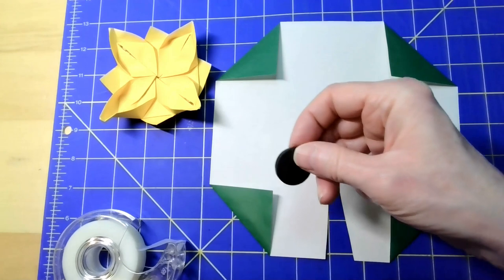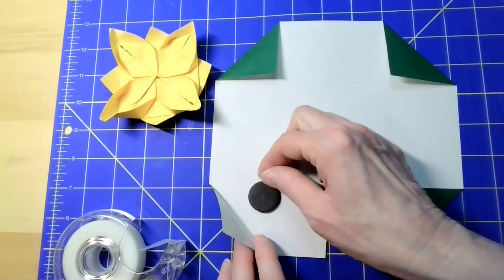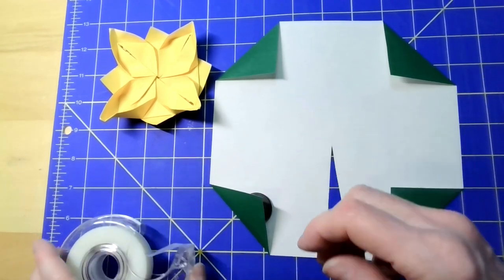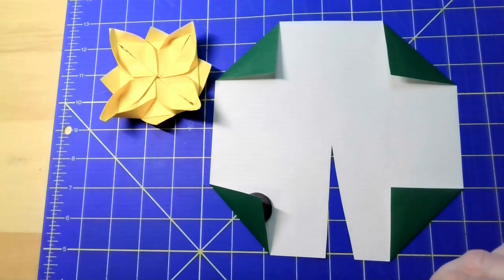The magnet goes inside one of the corners. Tape the edges closed to make a pouch that will hold the magnet in place.